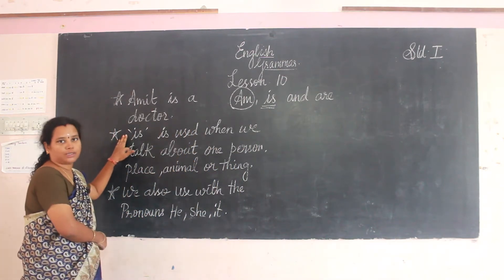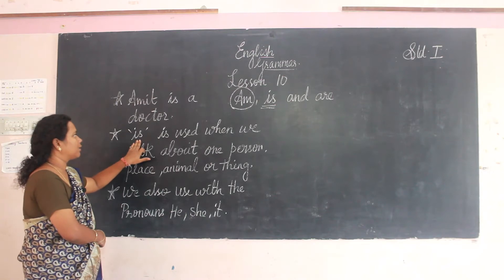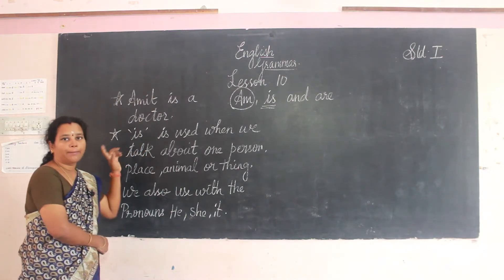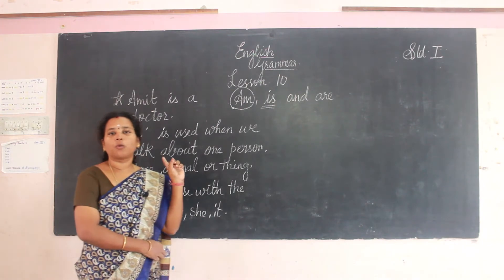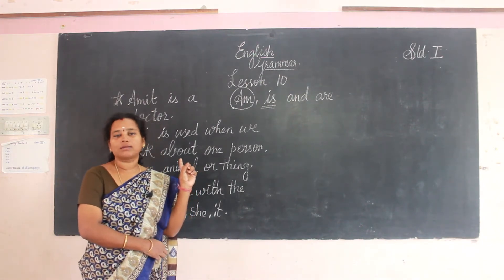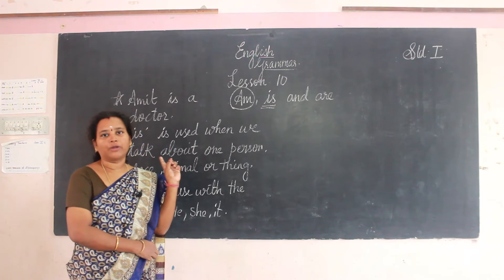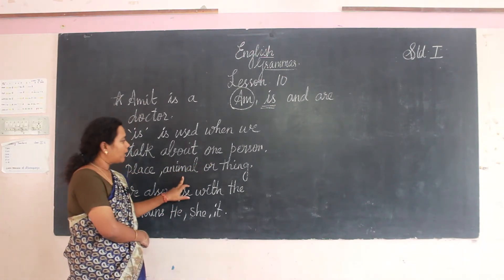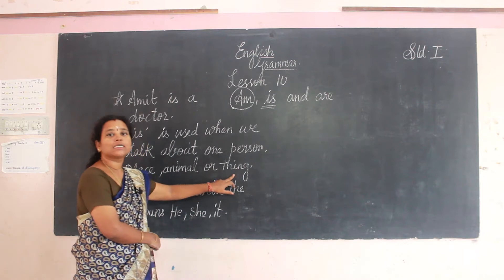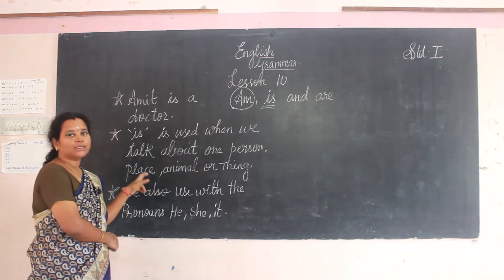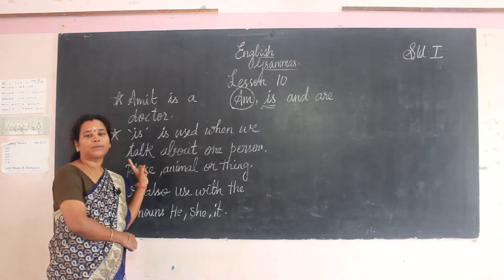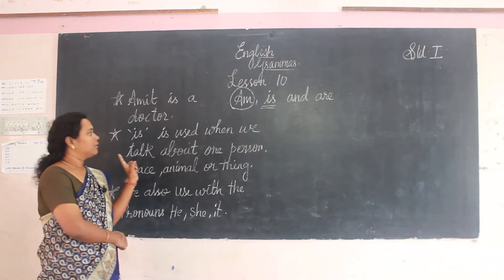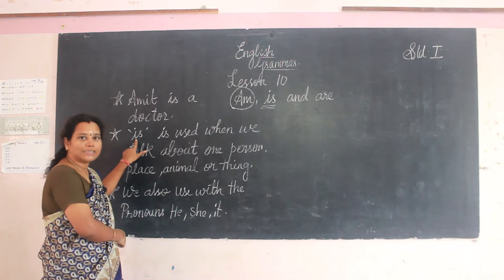'Is' is used when we talk about one person, one animal, one thing, one place — that is singular. When we talk about a single person, single animal, single thing, or a single place, there we have to use 'is'.